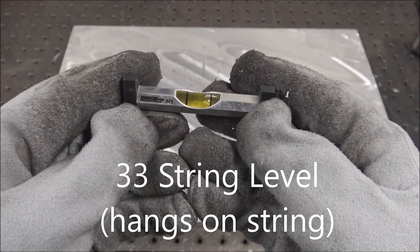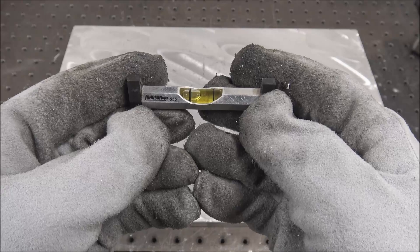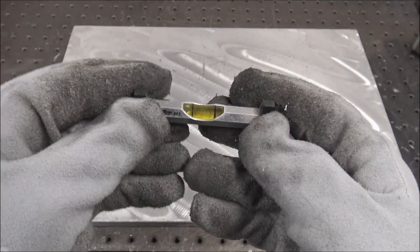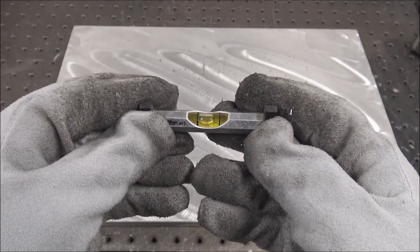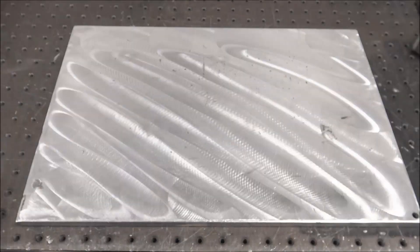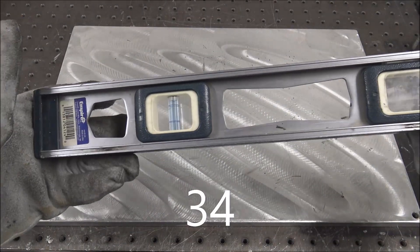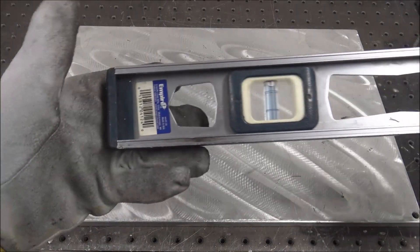Bubble levels for big fabrication jobs where you can just pull a string really tight and see how level it is—not super accurate but useful. Quality levels of various sizes. I really like this Empire brand.